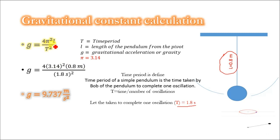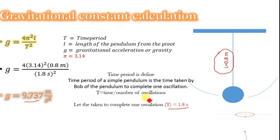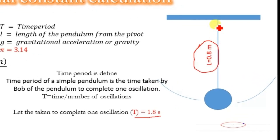...and solving, we get g = 9.737 m/s². You can do this experiment on your own using a simple pendulum. Calculate the length of the pendulum and the time taken to complete one oscillation.